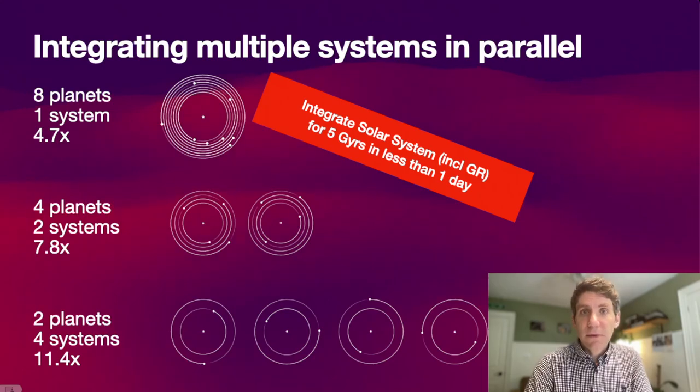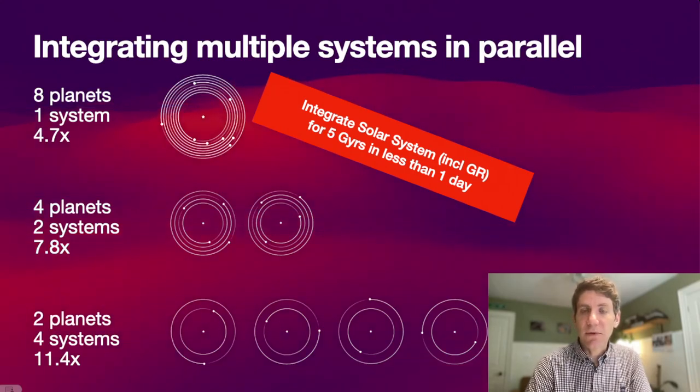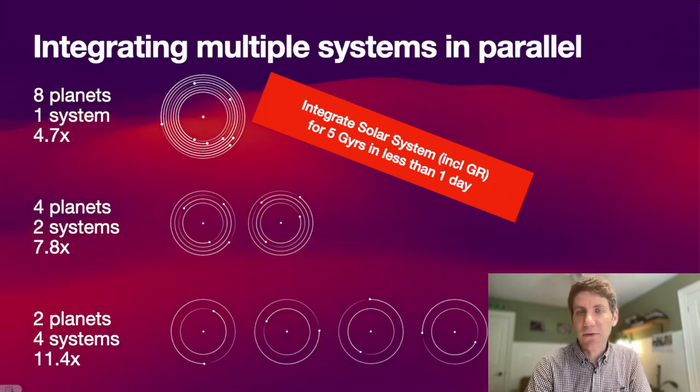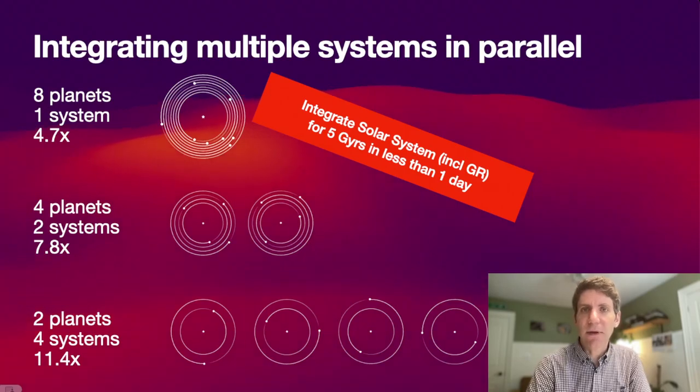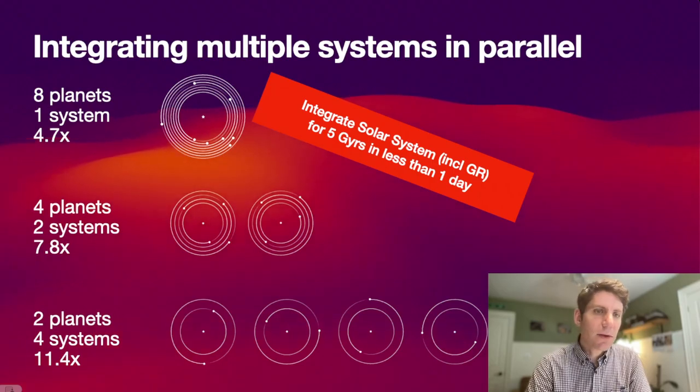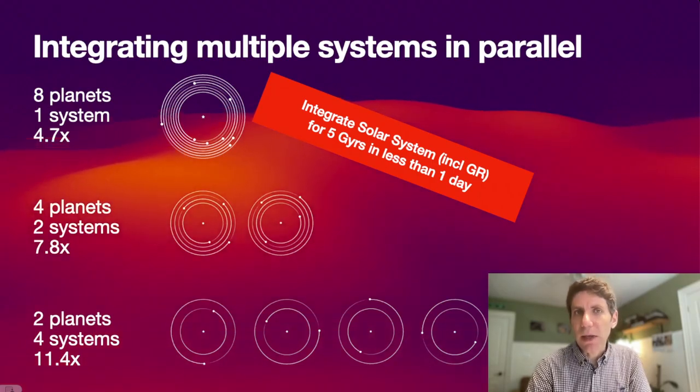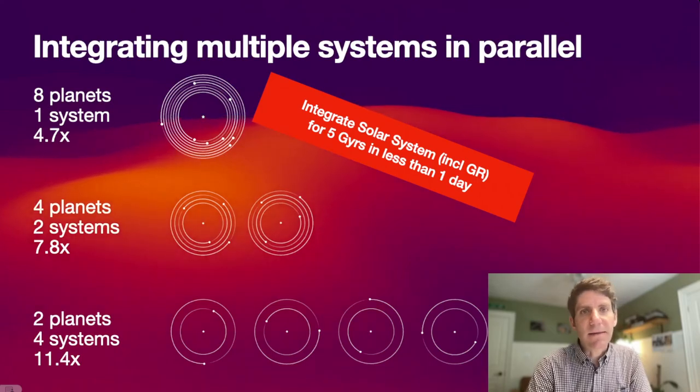This is a significant speedup, just to reiterate. Previously, if you wanted to integrate, for example, the solar system, including general relativistic corrections for about 5 billion years, which is how long the solar system has left while the sun remains on the main sequence, you would have to integrate that system for about a week. Now you can do it in less than a single day. That's a significant speedup.